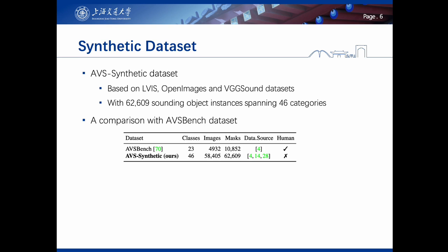As an instantiation of our annotation-free dataset collection pipeline for AVS, the AVS synthetic dataset covers 62,609 sounding object instances spanning 46 common categories. A more detailed comparison is shown in the table.